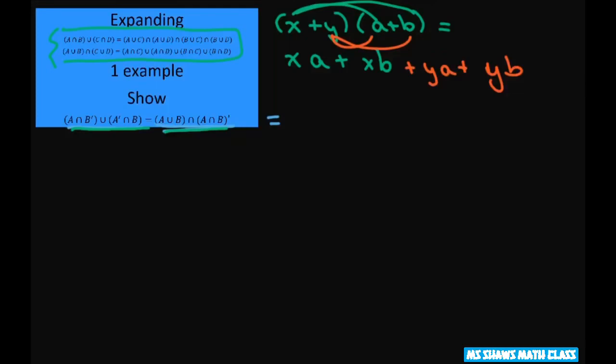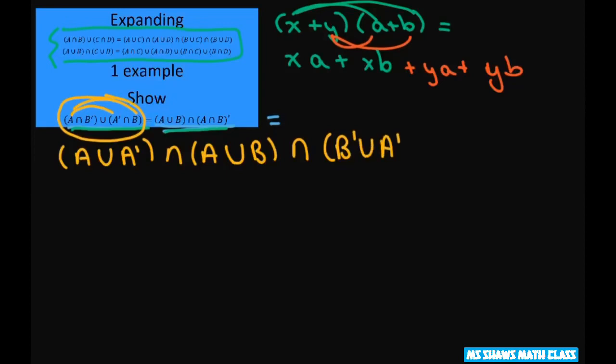So we know that for this part, that's going to equal, and this is what we're doing. We're just FOILing it out. We get A union A prime intersects A union B and then we have B prime union A prime and B prime union B.